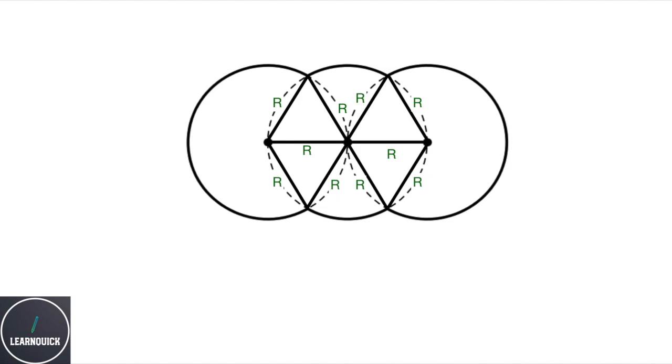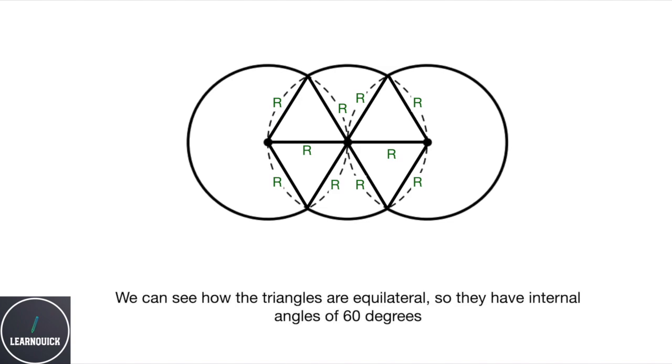And from this we can see that we get some equilateral triangles, so they have internal angles of 60 degrees.